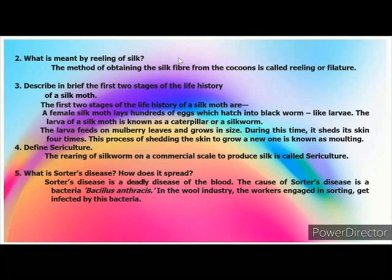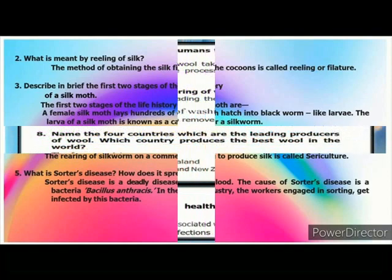Question 5: What is Sorter's disease? How does it spread? Answer: Sorter's disease is a deadly disease of the blood. The cause of Sorter's disease is the bacterium Bacillus anthracis in the wool industry. The workers engaged in sorting get infected by this bacteria.